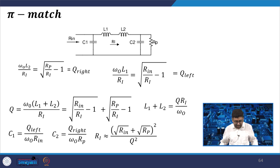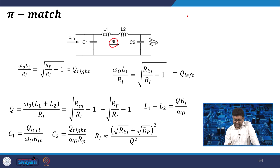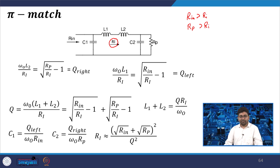In pi matching, you combine two LC sections together and an imaginary impedance Ri comes into the picture. Remember: the resistance in parallel with the capacitor is greater than Ri, and Rp is also greater than Ri. So Ri appears in the denominator. On the right side, ω₀L2/Ri = √(Rp/Ri − 1) = Q right.